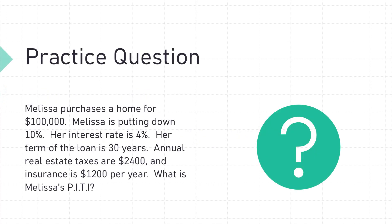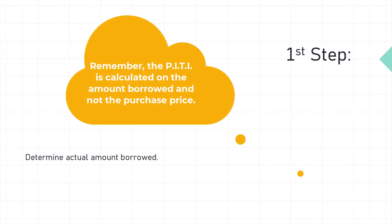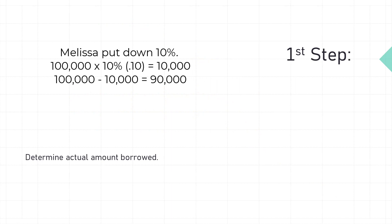Let's look at a sample question. Melissa purchases a home for $100,000, putting 10% down, at an interest rate of 4% for a 30-year term. Annual real estate taxes are $2,400 and insurance is $1,200 per year. What is Melissa's P-I-T-I? The first step is to determine the actual amount borrowed — P-I-T-I is calculated on the amount borrowed, not the purchase price. $100,000 times 10% equals a $10,000 down payment. $100,000 minus $10,000 equals a financed amount of $90,000.